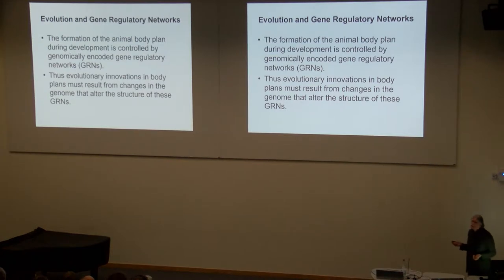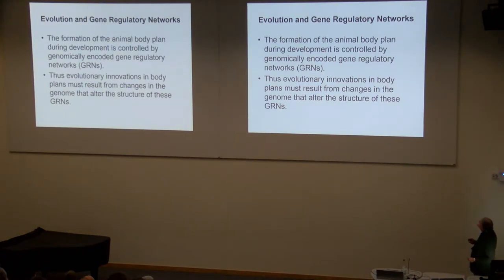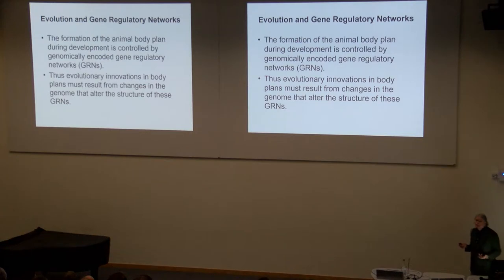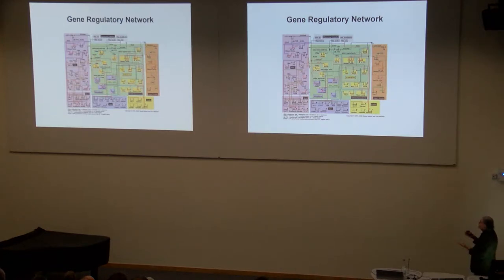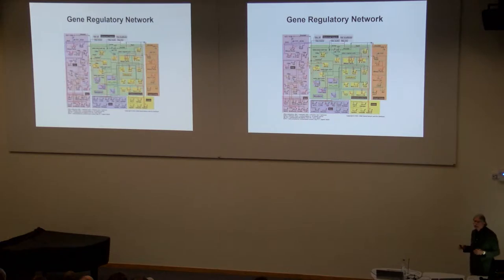You're probably familiar with gene regulatory networks, but let me give a brief definition. The formation of the animal body plan during development is controlled by GRNs, and thus evolutionary innovations in body plans must result from changes in the genome that alter the structure of these GRNs. Different research groups approach this differently, but here we have a portrayal of a GRN as an electronic wiring diagram — basically the instructions for telling the coding genes what to do.